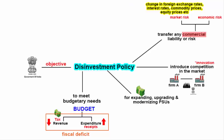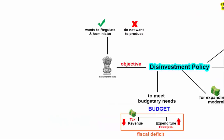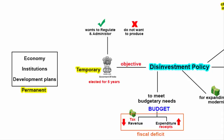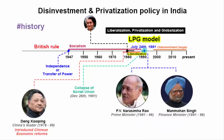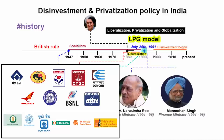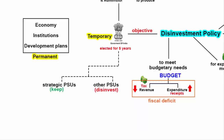The government wants to limit its role to regulation and administration — and that is actually a good thing. Governments are elected for 5 years, and after that may or may not be re-elected. Government comes and government goes, but the economy, institutions and development plans have to remain constant if we want our country to be a rising superpower. There has to be an ideological shift. In the past, government would nationalize sectors to control the economy. Most of the PSUs you see today were not started by the government — they were private sector firms taken over by the government.